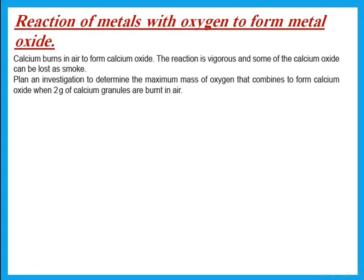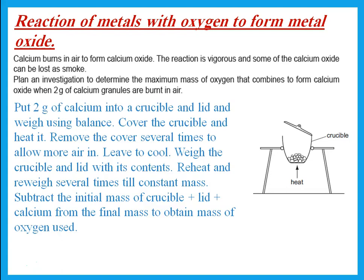A paper 6 type question: calcium burns in air to form calcium oxide. The reaction is vigorous and some calcium oxide can be lost as smoke. Plan an investigation to determine the maximum mass of oxygen that combines with 2 grams of calcium granules. Use a crucible and lid; place 2 g of calcium into the crucible and lid and weigh using a balance. Cover the crucible and heat it, removing the cover several times to allow more air in.